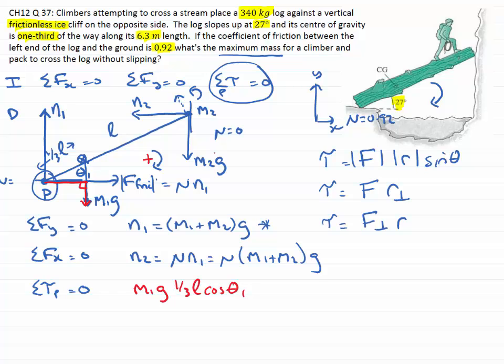The weight force from the climber M2g also provides a torque which tries to rotate clockwise, so we'll make that positive. The magnitude of the force is M2g, and the perpendicular distance is given by L times the cosine of theta 1.